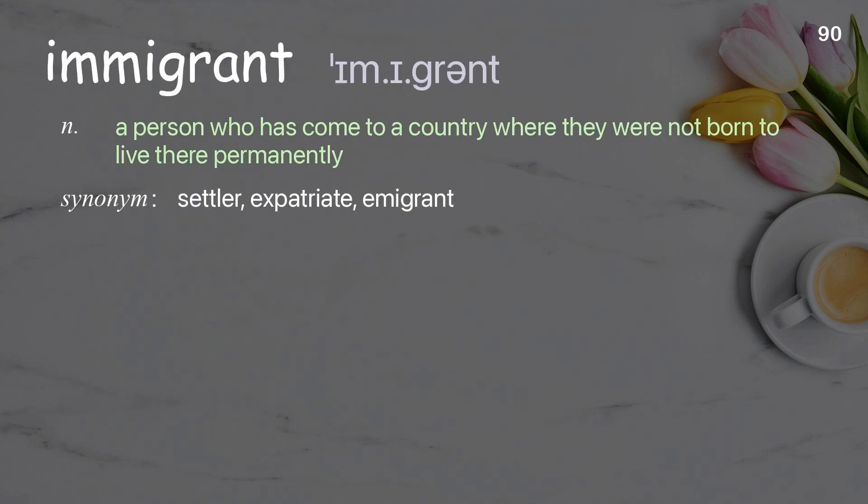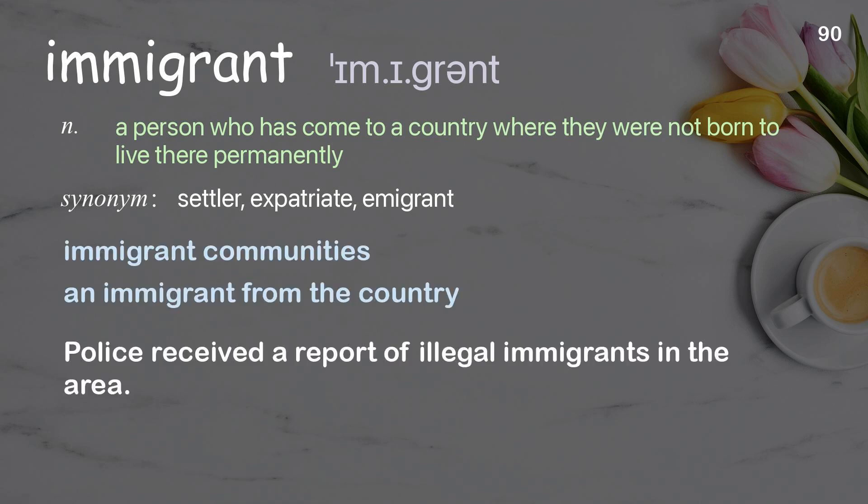Immigrant: a person who has come to a country where they were not born to live there permanently. Examples: immigrant communities, an immigrant from the country. Police received a report of illegal immigrants in the area.